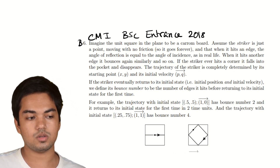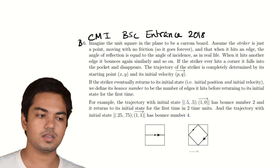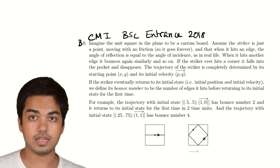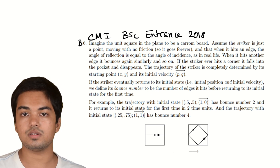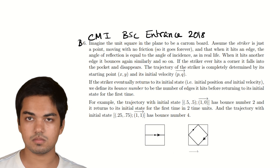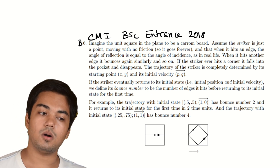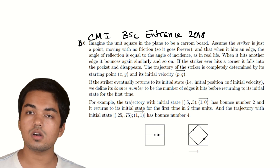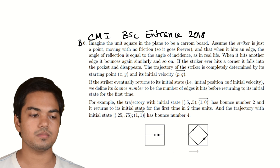The problem says: imagine the unit square in the plane to be a carom board. Assuming the striker is just a point moving without friction, when it hits an edge the angle of reflection equals the angle of incidence — so it moves like a light beam. When it hits another edge it bounces again similarly, and so on. If the striker ever hits a corner, it falls into the pocket and disappears.